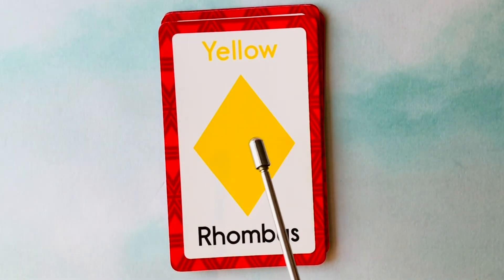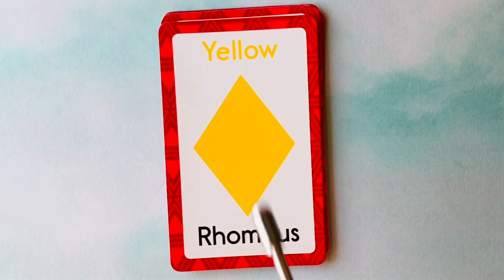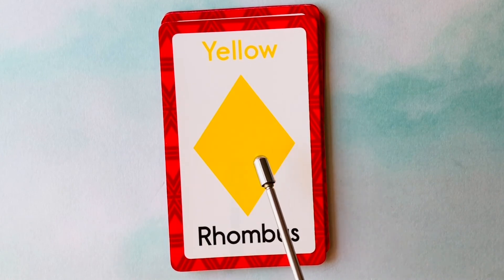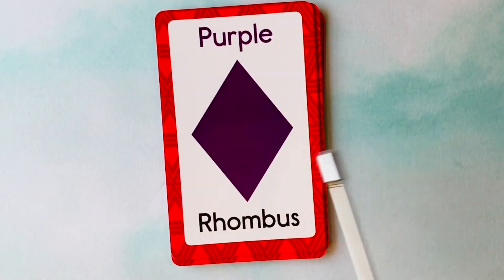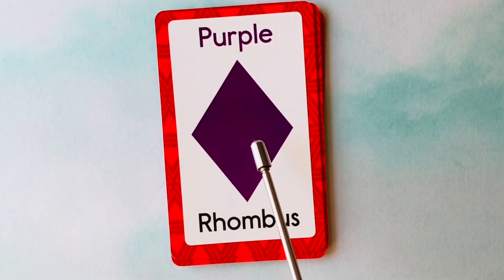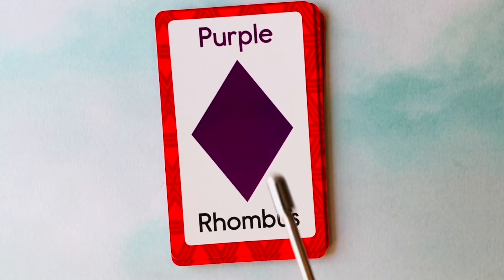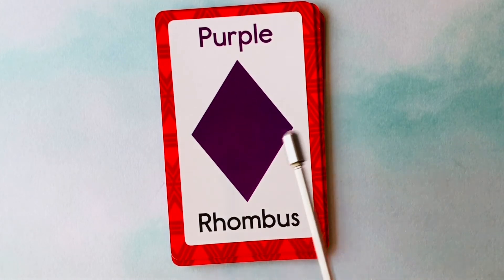This is a rhombus. What color is this rhombus? It's a yellow rhombus. This is also a rhombus. What color is this rhombus? It's a purple rhombus.